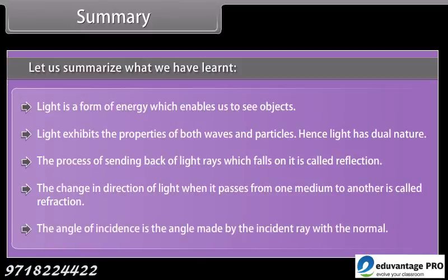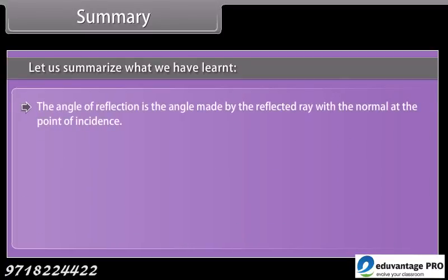The angle of incidence is the angle made by the incident ray with the normal. The angle of reflection is the angle made by the reflected ray with the normal at the point of incidence. The angle of incidence is equal to the angle of reflection.